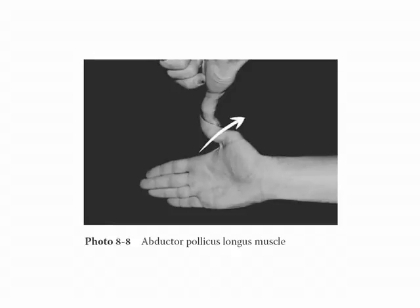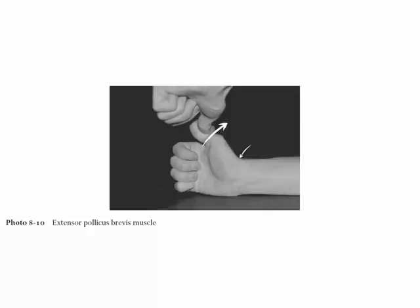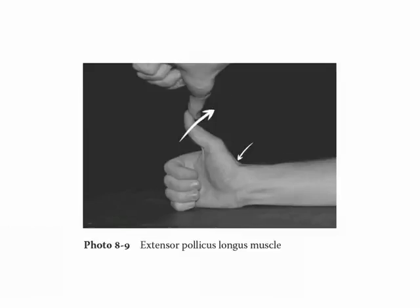The extensor pollicis brevis tendon is the shorter of the two tendons and attaches to the metacarpophalangeal joint — extend your thumb at the metacarpophalangeal joint to demonstrate its action. The extensor pollicis longus tendon is the longer of the two tendons and attaches to the proximal interphalangeal joint — extend the proximal interphalangeal joint of your thumb against resistance to demonstrate its action.